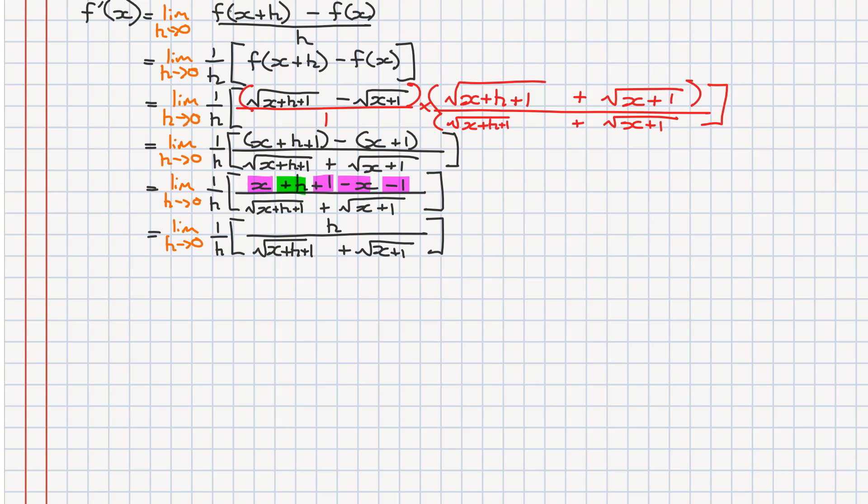Now we've got a simplified fraction by collecting all the like terms. Our next step is we want to deal with this h in the denominator because if we evaluate the limit as is, we're going to get an undefined result. So if we take this h down in the denominator and use it on the h in the numerator, these two h's are going to cancel each other out. Now we're in a step where we can evaluate the limit and still get a reasonable result.